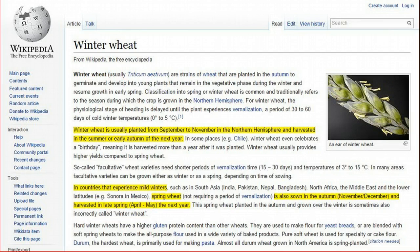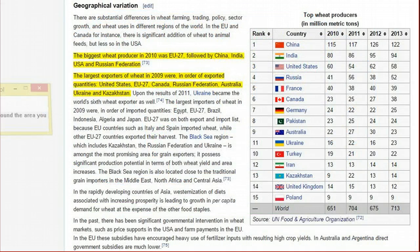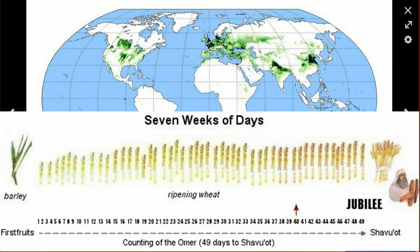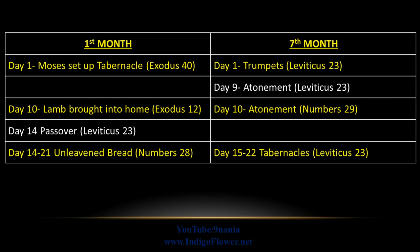In the northern hemisphere, winter wheat is usually planted from September to November and harvested in the summer or early autumn. The wheat harvest is a code in the Biblical text — it represents the escape, and we know that escape occurs at the time of the asteroid impact. The first fruits of the wheat harvest are observed during the appointed time of weeks, which starts in the first month and ends on Shavuot in the third month. That may be why the Bible matches up the appointed times of the first month with the appointed times of the seventh month.